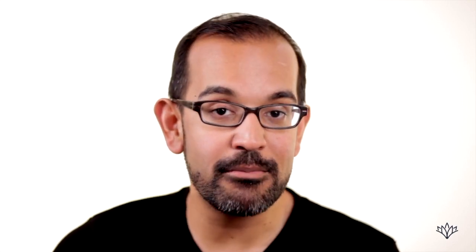We can cancel the 6 and the 12, which gives us 2π on top times 5, which is just 10π. Remember, that 10π is just the distance around this portion of our circle. But we have to add in those two radii, which are 6 and 6. So we have 10π plus 6 plus 6, which is 10π plus 12 — answer choice D.